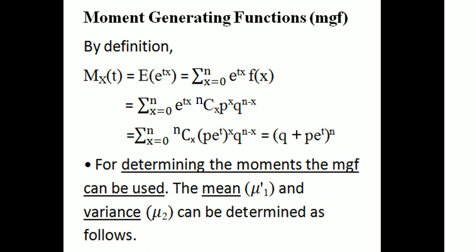Next we want to discuss the moment generating function of a binomial distribution. By the definition of the moment generating function, we have M_X(t). For a discrete variable, M_X(t) is equal to the expectation of e raised to tx, and the summation from x equal to 0 to n of e raised to tx into f(x).